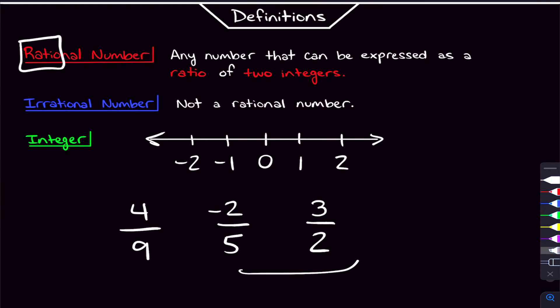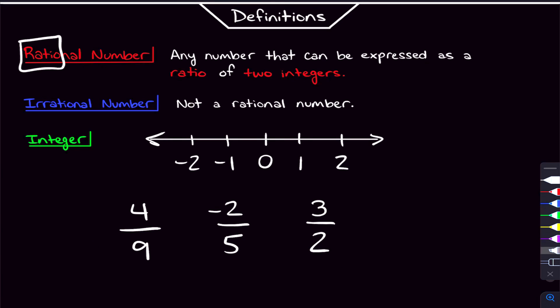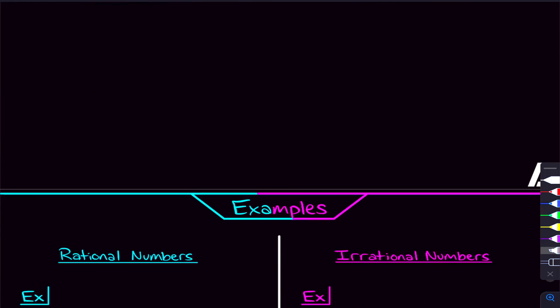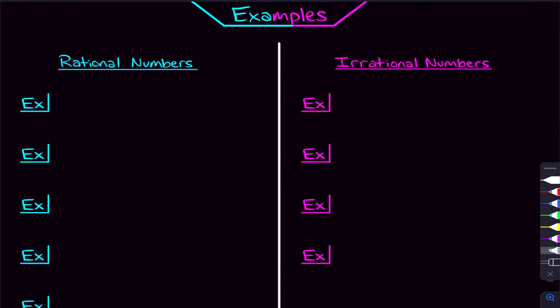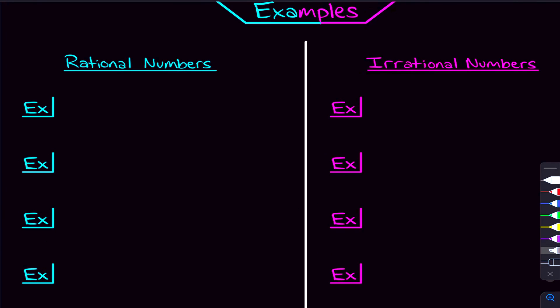You can remember that it's a rational number because it literally has the word ratio in it. So in summary, a rational number is any number that you can write as a fraction with an integer in the numerator and an integer in the denominator. Now we can actually go through some examples — both rational and irrational numbers. A rational number is a ratio of two integers, and four over nine is one of them.